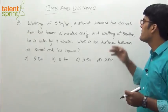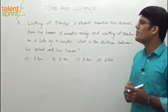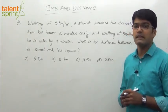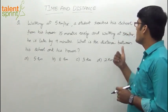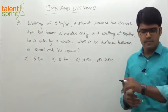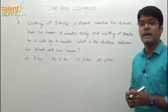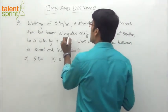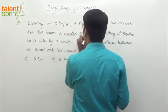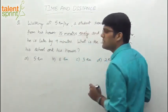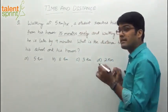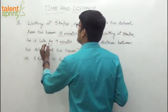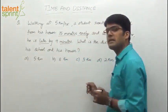Walking at 5 kmph, a student reaches his school from his house 15 minutes early, and walking at 3 kmph, he is late by 9 minutes. There are two different cases: in the first case, he reaches 15 minutes early, and in the second case, he is late by 9 minutes.